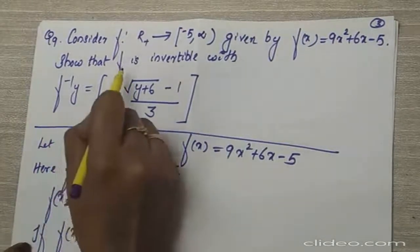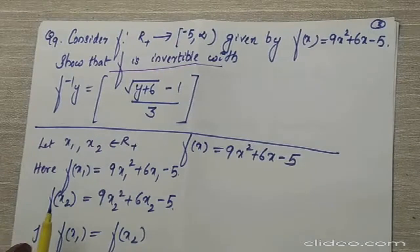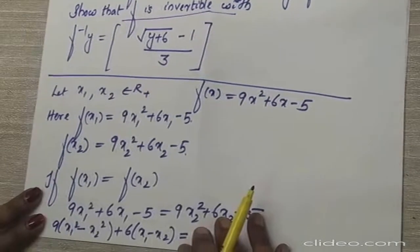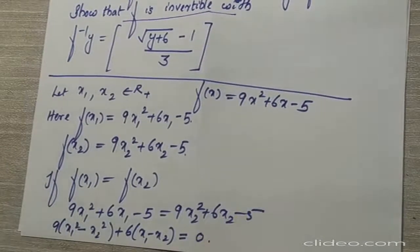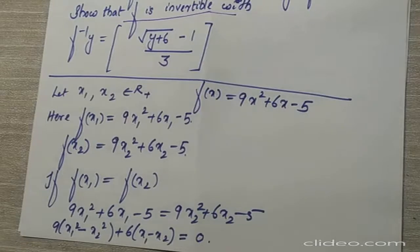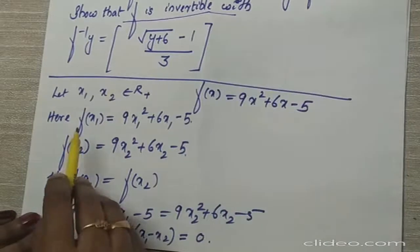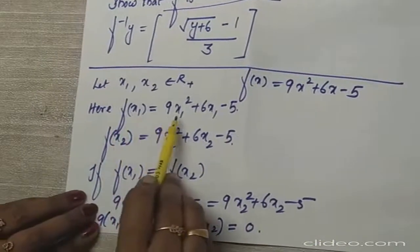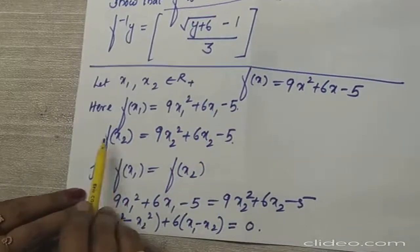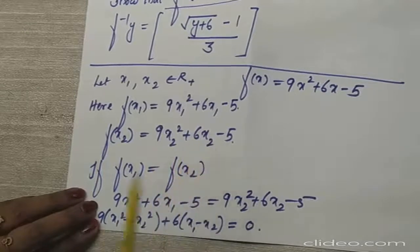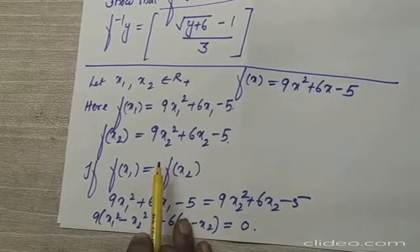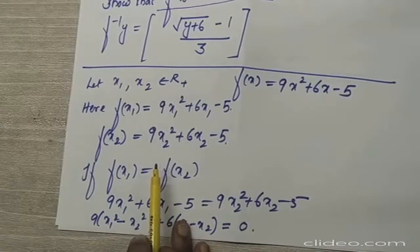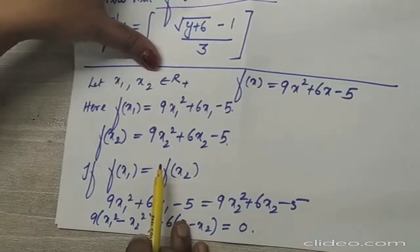To show that the function is invertible, you need to show that the given function is one-one and onto. First, I will show that this is a one-one function. For showing one-one, we take f(x₁) and f(x₂). So f(x₁) = 9x₁² + 6x₁ - 5 and f(x₂) = 9x₂² + 6x₂ - 5. The procedure is to assume f(x₁) = f(x₂) and show that x₁ = x₂.